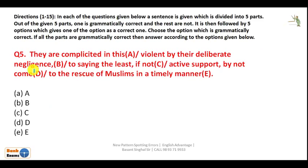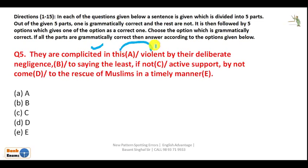Now let us see another category of latest pattern question. In this particular question the sentence is divided into five parts; out of five parts only one part is grammatically correct and the remaining parts are wrong. You have to find out the correct part. For example: 'They are complicated' — complicit means involved, and 'involved' already has '-ed', so you cannot say 'complicit-it'; you have to say 'complicit'.